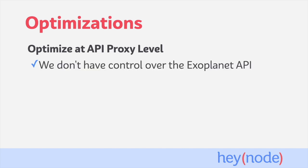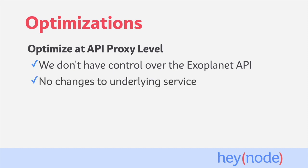It's useful to implement these optimizations at the API proxy level instead of at the service level for a few reasons. First, in the case of the Exoplanet API, it's a third-party API that we don't directly have control over. Because we don't control it, we have no choice but to add these optimizations on top of it — the API proxy gives us a place to do that. If we did have access to the underlying service itself, implementing these optimizations using an API proxy allows us to leave the service as it is and avoid making changes to the service directly.